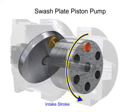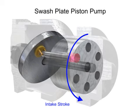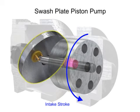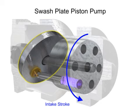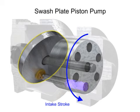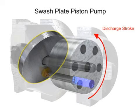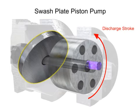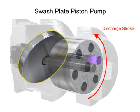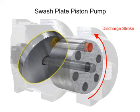On the intake stroke, a spring ensures the pistons pull back and maintain contact with the swash plate, causing fluid to fill the empty cavity left behind. On the discharge stroke, the angle of the swash plate forces the pistons back inside the piston block and discharges the fluid. The greater the slant on the swash plate, the further the pump pistons move and the more fluid they transfer.